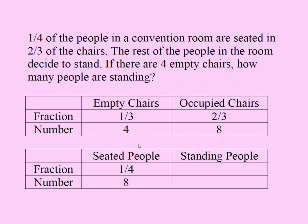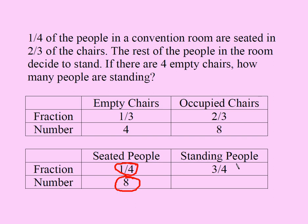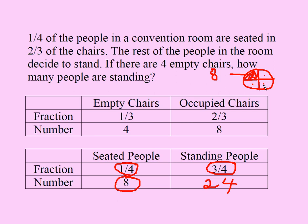We're almost done. If one-fourth of the people are seated, then three-fourths of the people are standing, because one-fourth plus three-fourths equals four-fourths — all the people. If one-fourth of the people is the same as eight people, then three-fourths should be three times eight, which is 24. Just one-fourth is eight, so three-fourths is eight plus eight plus eight, which equals 24.